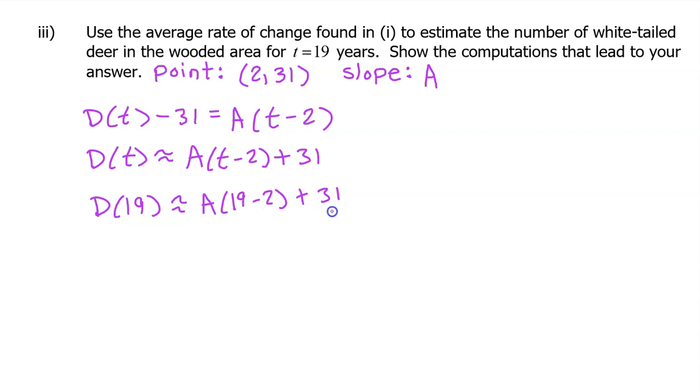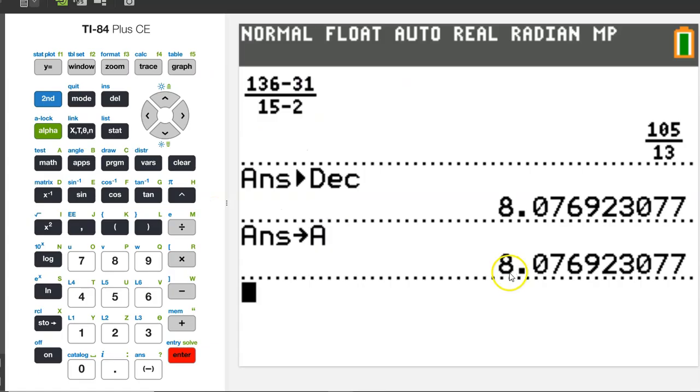Let's put this in the calculator. Remember that we stored this whole decimal into the letter a. Okay, so we can just use the letter a in our calculation. Pull it up by hitting alpha a. So that's a times 19 minus 2, obviously you could just put 17, plus 31.